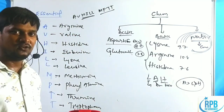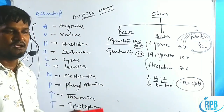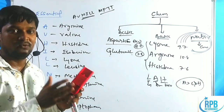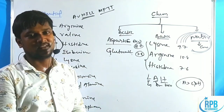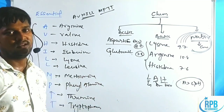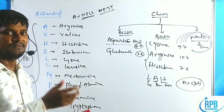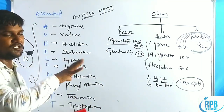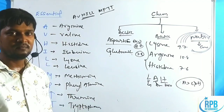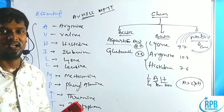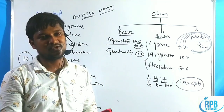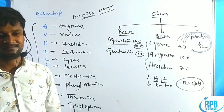That's all for this video. We have classified amino acids based on occurrence, requirement, chemical nature, and location. I'll provide complete information regarding the amino acid introduction. If you like the video, share it and subscribe to the channel. Thank you for watching.